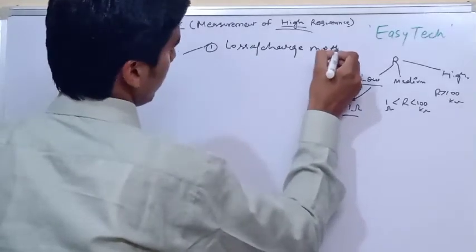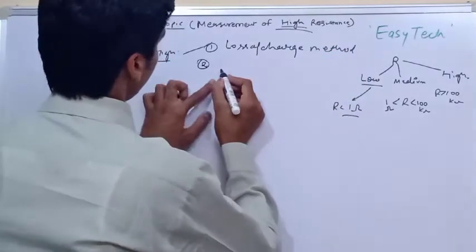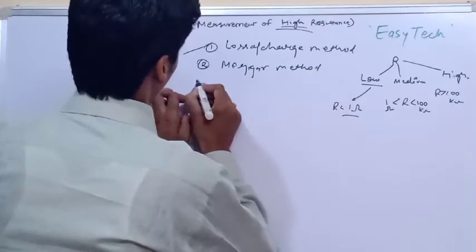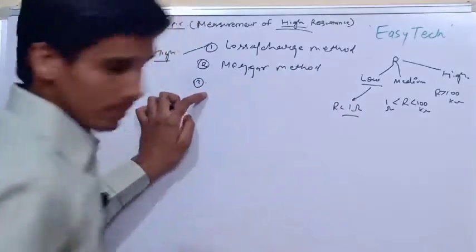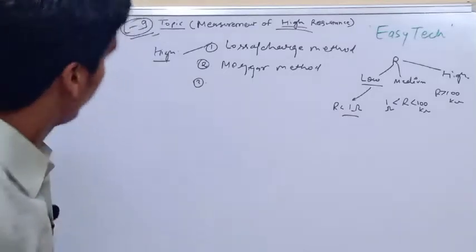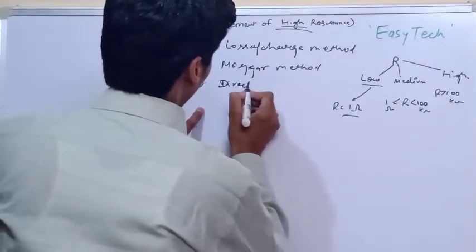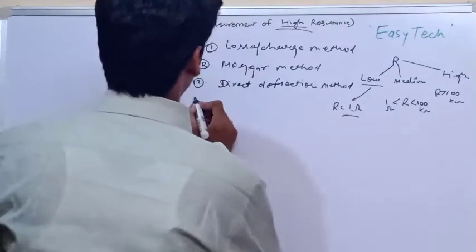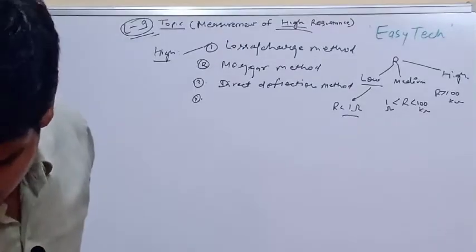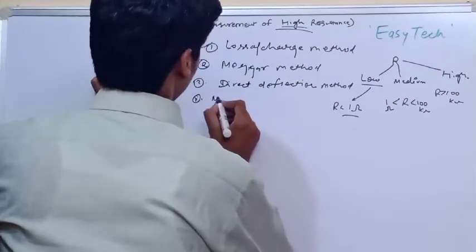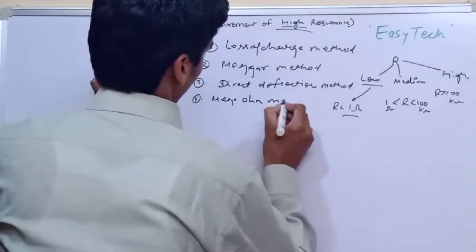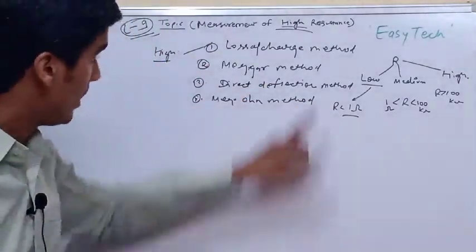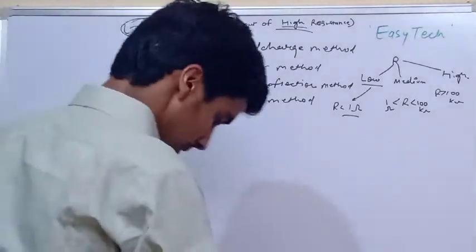The four methods for high resistance measurement are: first, the loss of charge method; second, the mega method; third, the direct deflection method; and fourth, the mega ohm method. Among these four, the loss of charge method is the most important.